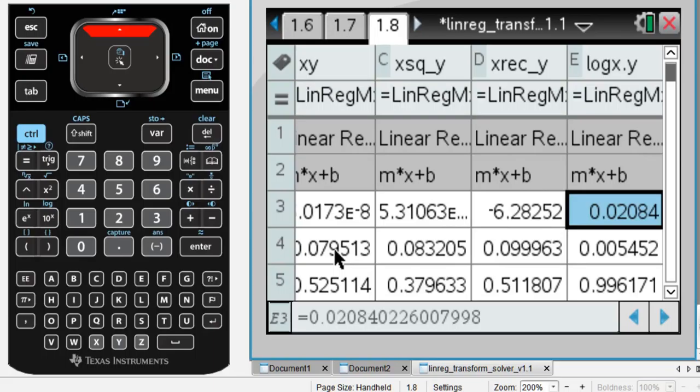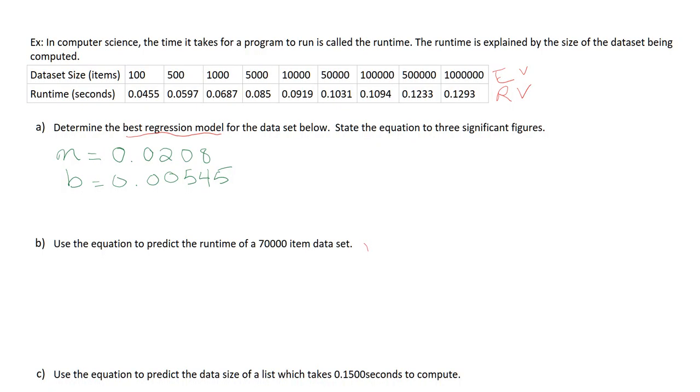Again, looking here, m is in the first ungraded row, and b is in the second. So that's going to be my gradient there, 0.02 rounding to three significant figures. So 0, 2, 0, 8. And then here, again, rounding to three significant figures, 0, 0, 5, 4, 5. Okay. So you'll just need to remember what those values are and pop them into your equation.